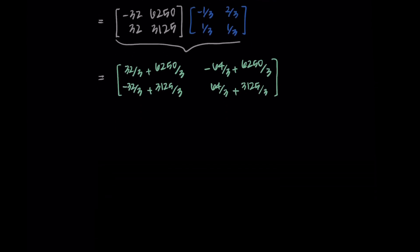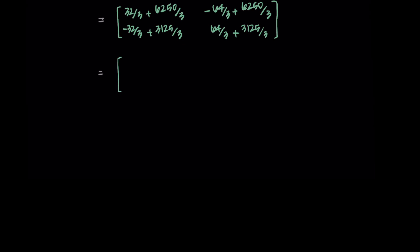Now I'm just adding the fractions together and simplifying. In the first row, I'm getting 6,282 over 3 and 6,186 over 3. Then the second row, I have 3,093 over 3 and 3,189 over 3. Luckily, all of these big numbers are divisible by three. I'm getting my final matrix, which is [2094, 2062; 1031, 1063].